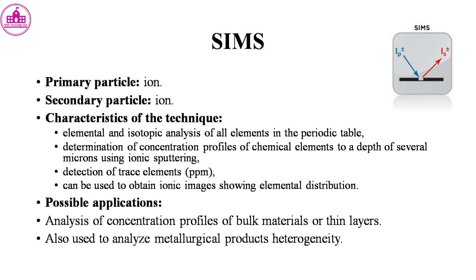SIMS uses an ion primary particle and detects ion secondary particles. It provides elemental and isotopic analysis of all elements in the periodic table, determination of concentration profiles of chemical elements to a depth of several microns using ionic sputtering, detection of trace elements, and can be used to obtain ionic images showing elemental distribution.